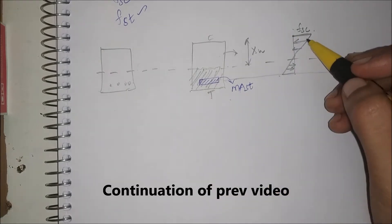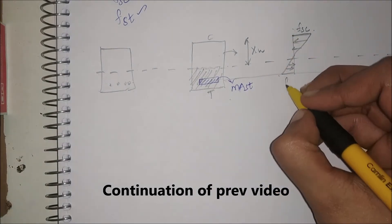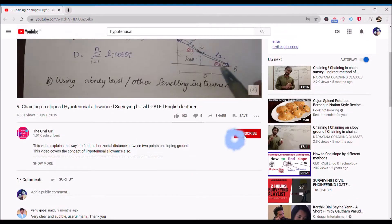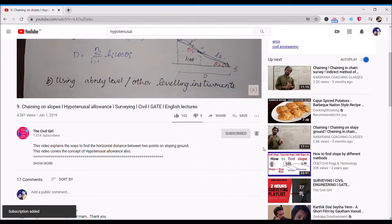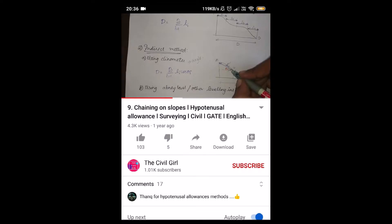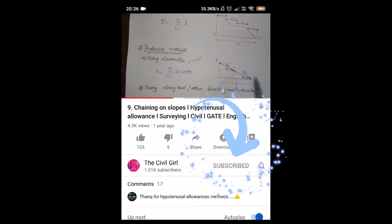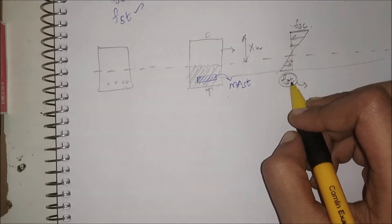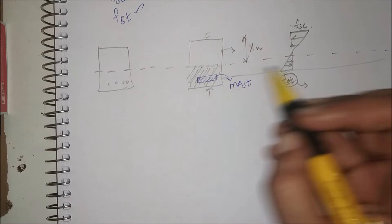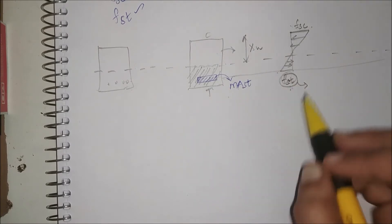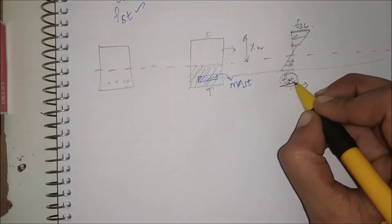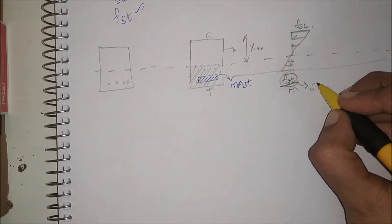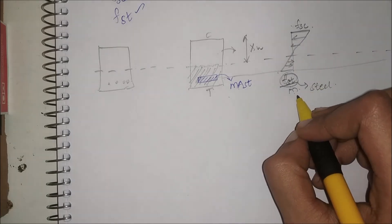At the bottom it is tension, therefore at the top it will be FSC, and at the bottom it will be FST. FST means stress in concrete at the level of steel — it is not the stress in steel. So if you need to find the stress in steel, you have to divide FST by M. Dividing FST by M will give us the stress in steel.